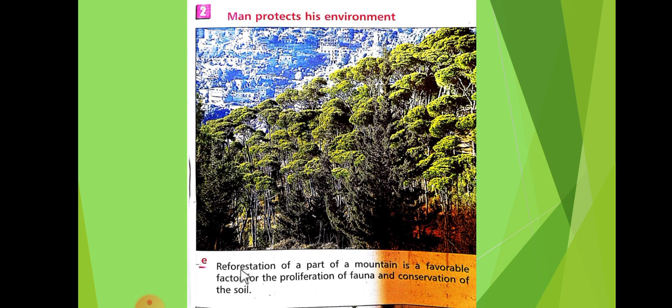Reforestation — meaning reforestation, إعادة تشجير, إعادة زرع عشان نعمل كمان شو غابي. Reforestation of a part of a mountain is a favorable factor for the proliferation of fauna and conservation of soil. Fauna is the animal kingdom — من كل أنواع الحيوانات, من الحشرات لأكبر الحيوانات. When we have many plants in the environment, there will be insects and animals living around them — this leads to the proliferation and multiplication of fauna.